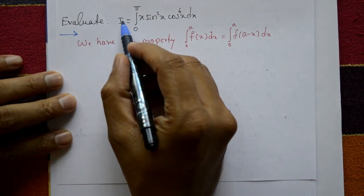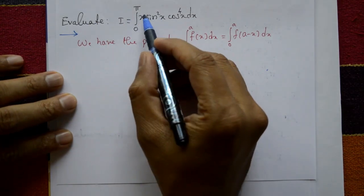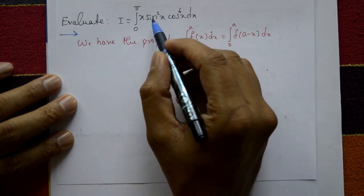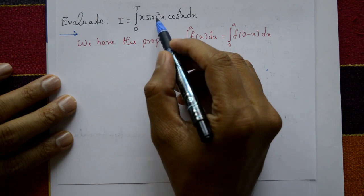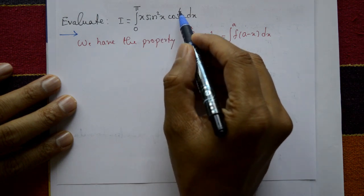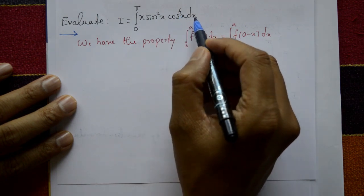Evaluate I, which is equal to the integration from 0 to π of x·sin²x·cos⁴x dx.